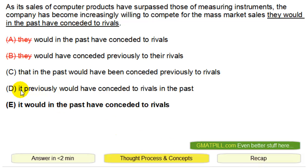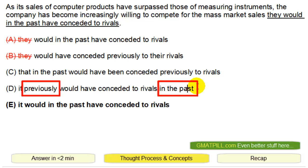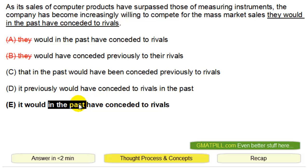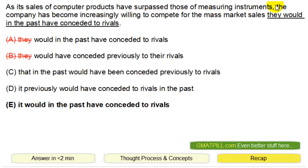The issue with D is 'it previously,' meaning in the past, 'it previously would have conceded to rivals' — again in the past. So this double repetition makes D no good. E places 'in the past' so it sets the time period: it would, in the past, have conceded to rivals. As a recap: we have a comma, we notice the word 'as,' we don't read the details of that part, we focus on the subject 'the company,' and recognize that 'they' violates subject-pronoun agreement — it should be 'it.' So between D and E, we choose E as the final answer.